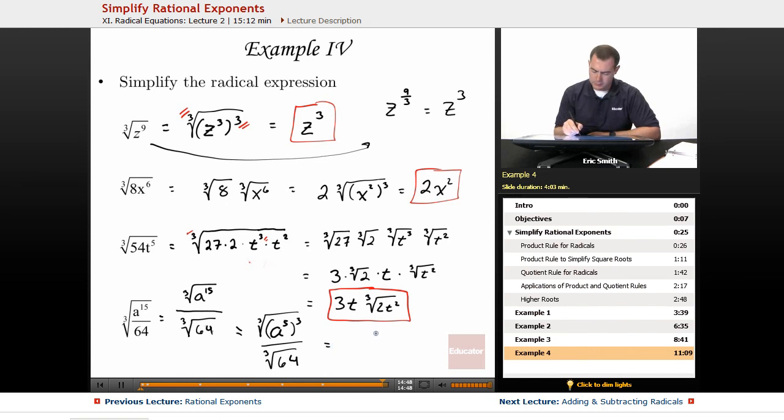All right, so this would simplify into a to the 5th and the cubed root of 64, 4. And then that one simplified.